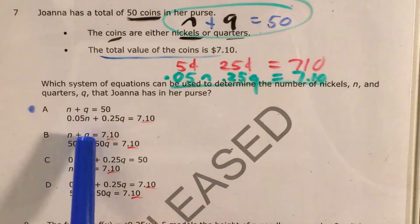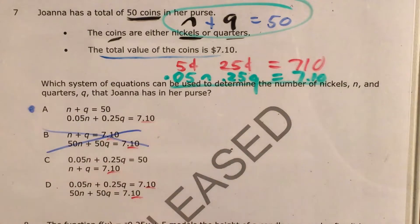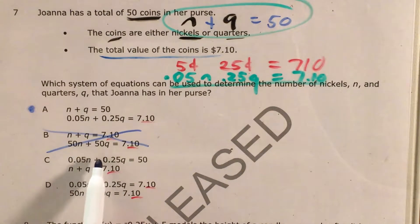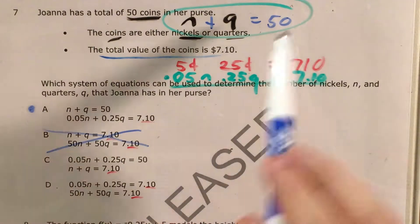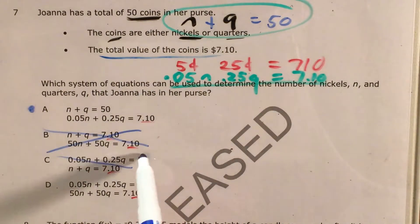So choice B, nickels plus quarters equals, should equal 50. We can already see that that's not what we're looking for, so choice B is out. And I think for choice C, we run into a similar problem. .05N plus .25Q equals 50, and nickels plus quarters equals 7.10. So they got the numbers mixed up. So C is not it.